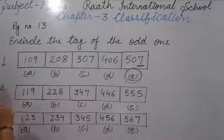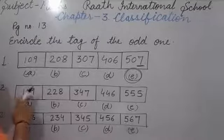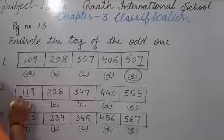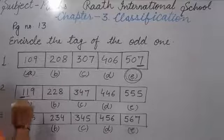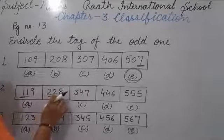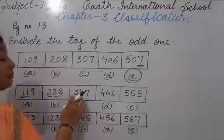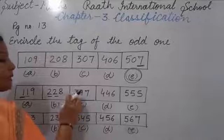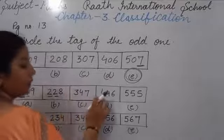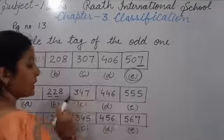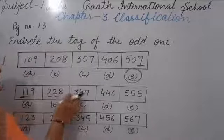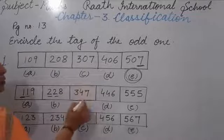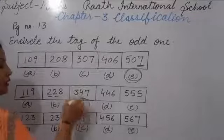Now second question: 119, 228, 338, 44, 55. The hundreds and tens digits are repeating — same digits. 1-1, 2-2, 3-3 — so repeating pattern. Now there will come 3-3, but there is given 3-4. So that means this is different from others — the hundreds and tens digits should be the same. 3-4 breaks this pattern. So we circle it.